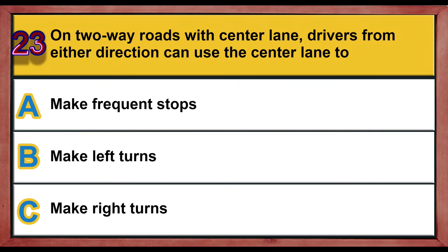Question 23. On two-way roads with a center lane, drivers from either direction can use the center lane to: A. Make frequent stops. B. Make left turns. C. Make right turns. Correct answer is B: Make left turns.